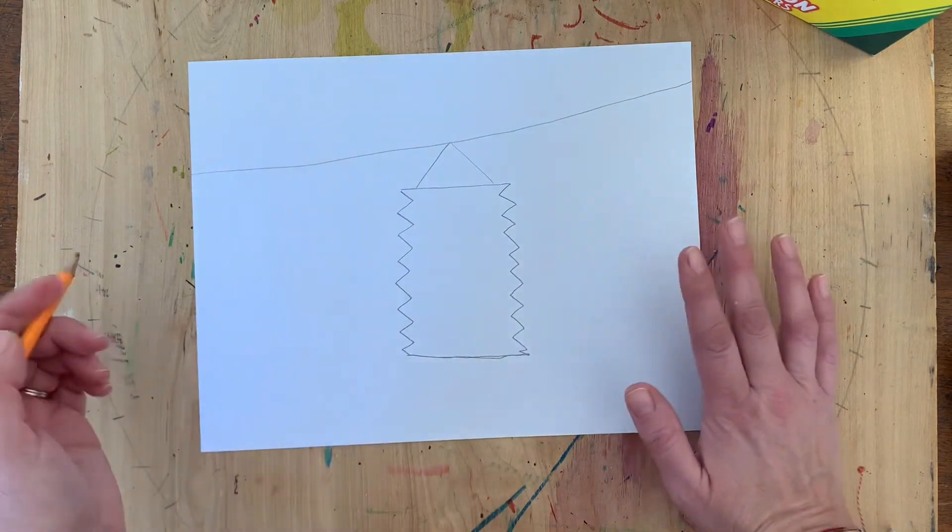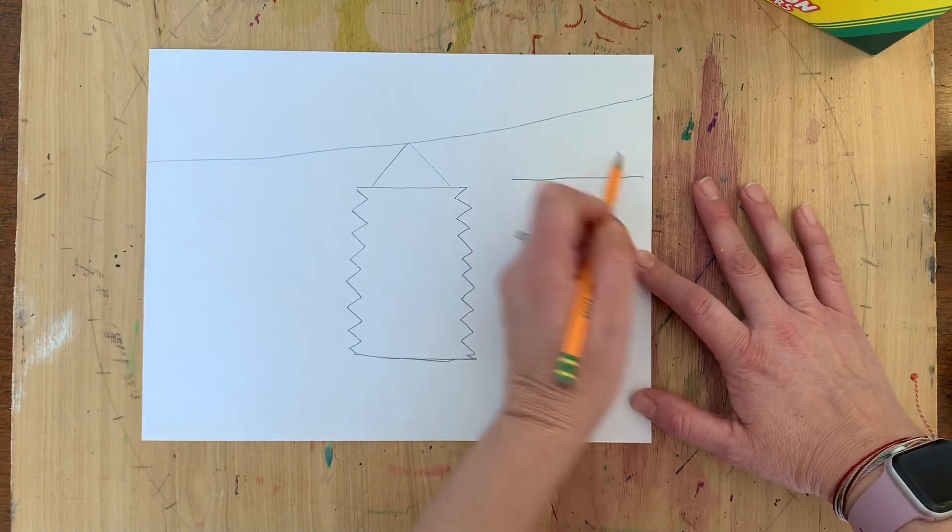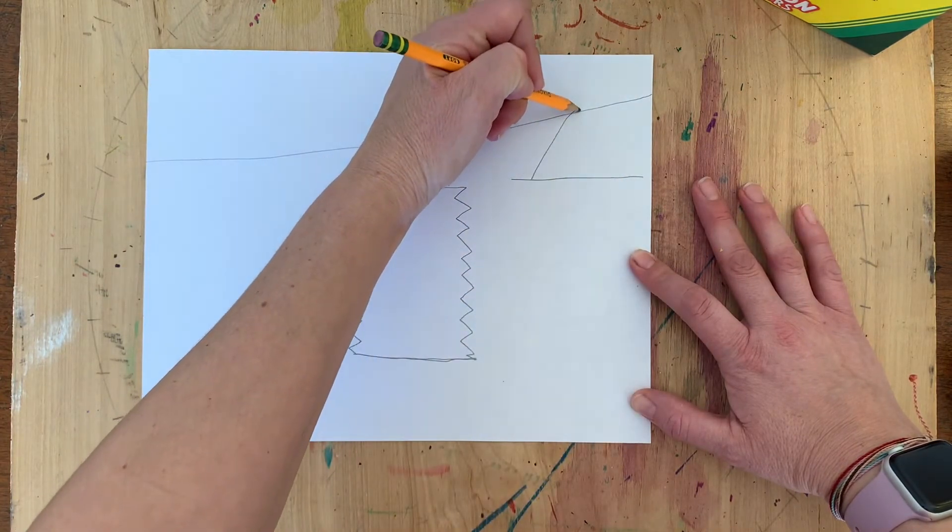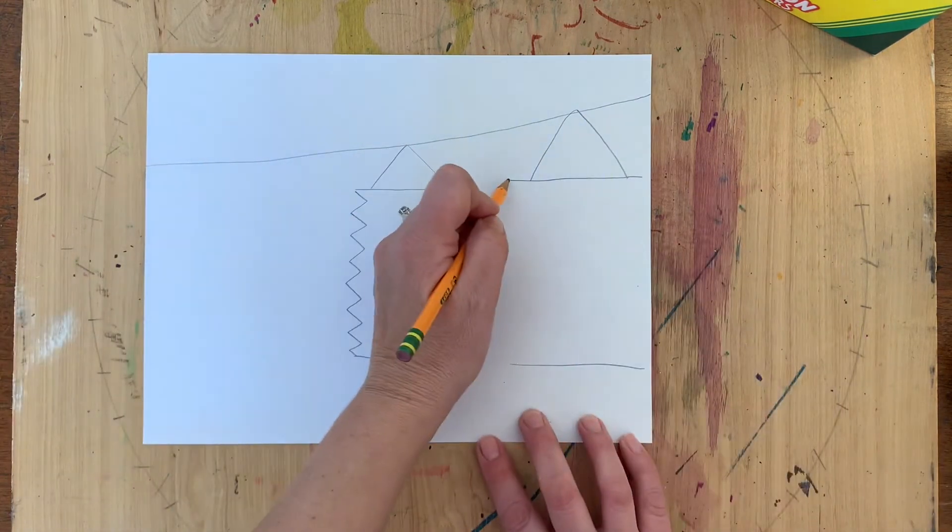And then you'll do the same thing. You'll make your larger one here, it's going to make a bigger line. Yours may go off. And then I'll do my zigzag.